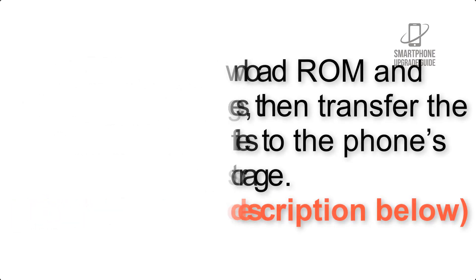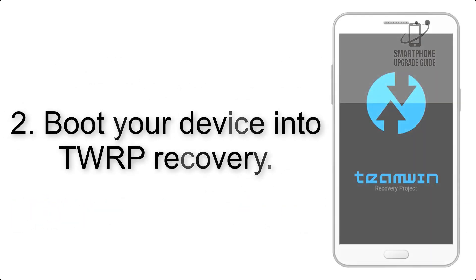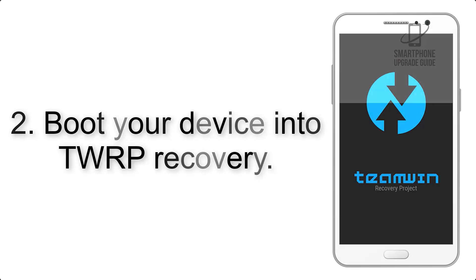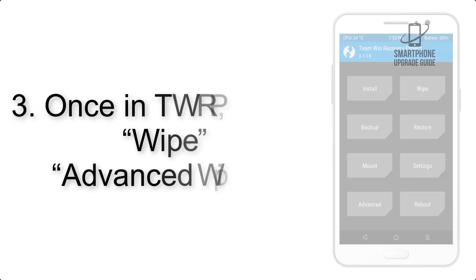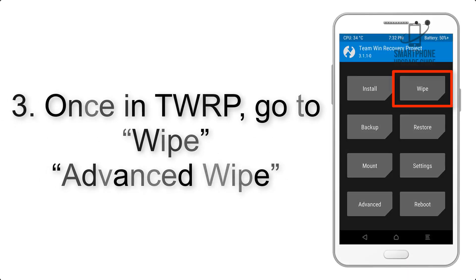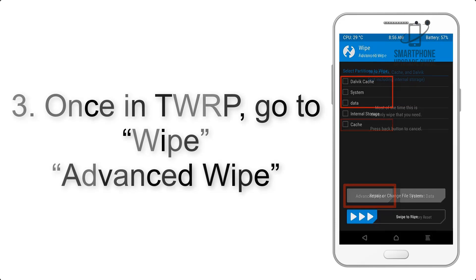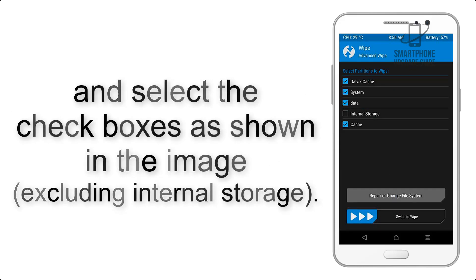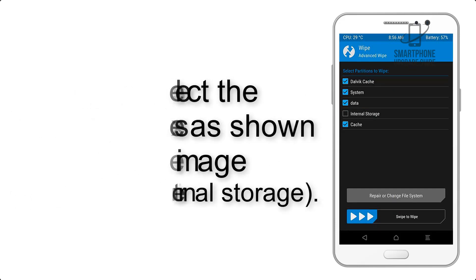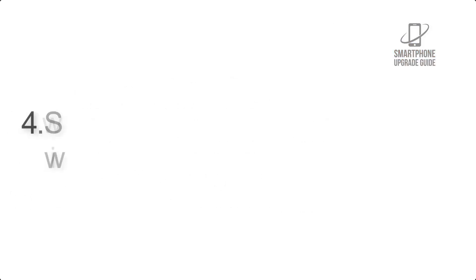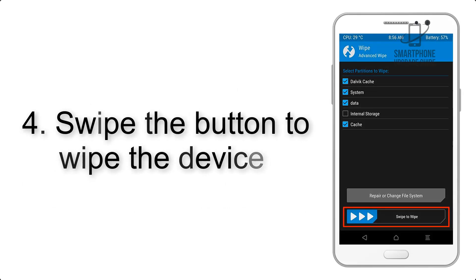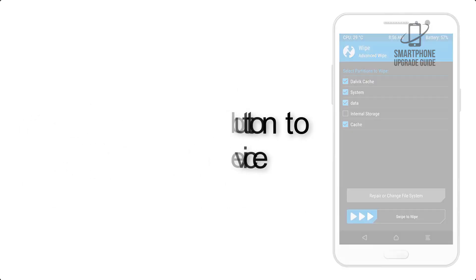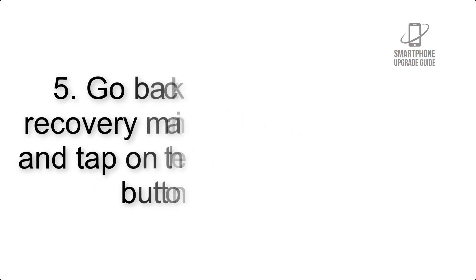Step 3: boot your device into TWRP recovery. Once in TWRP, click on Wipe, then Advanced Wipe, and select the checkboxes as shown in the image, excluding internal storage. Step 4: swipe the button to wipe the device.